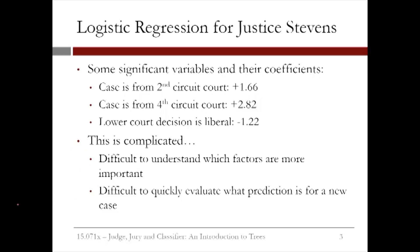Now that we have our data and variables, we are ready to predict the decisions of Justice Stevens. We can use logistic regression, and we get a model where some of the most significant variables are whether or not the case is from the 2nd circuit court, with a coefficient of 1.66, whether or not the case is from the 4th circuit court, with a coefficient of 2.82, and whether or not the lower court decision was liberal, with a coefficient of negative 1.22.